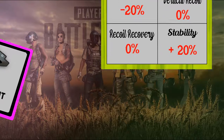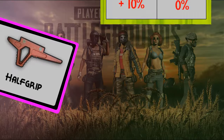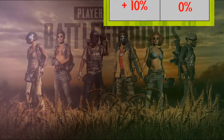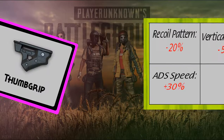The half grip — don't be fooled into thinking it's the same as others. It reduces recoil pattern by 20%, and also reduces both vertical and horizontal recoil by 8%, with recoil recovery rate increasing by 10%, which is great. The thumb grip reduces recoil pattern by 20%, reduces vertical recoil by 5%, and increases ADS speed by 30%, meaning you open your scope 30% faster.